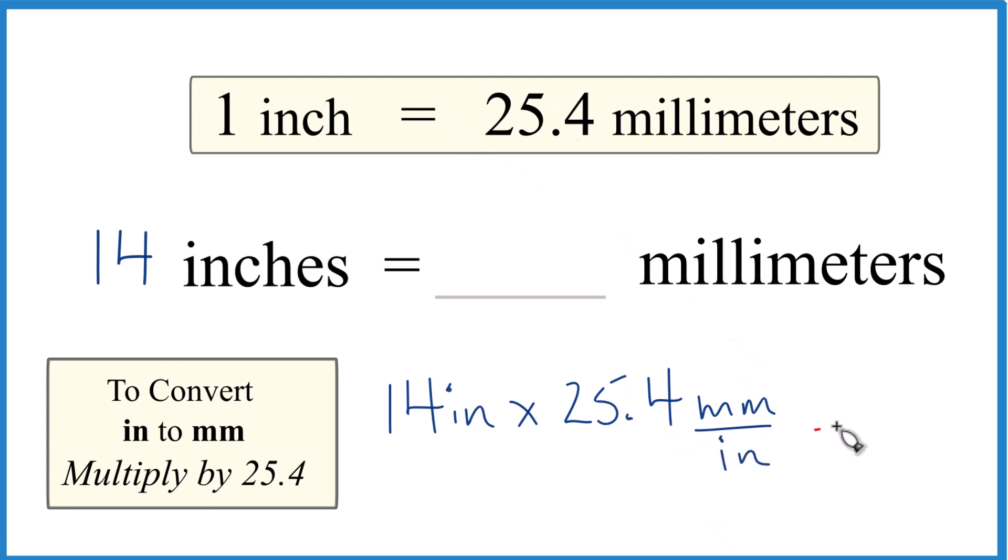And now when we multiply, we have inches on top and the bottom. They cancel out. We're left with millimeters, so we know we set it up correctly.